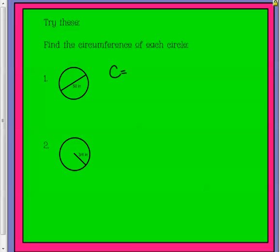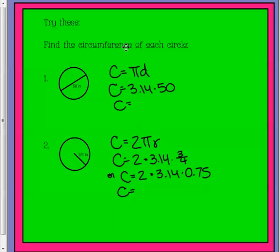The first step that I want to show you is you should have used pi times diameter for this one and 2 pi r for this one. The next step is to plug in your numbers and then to solve.